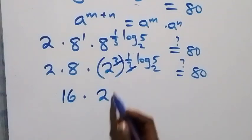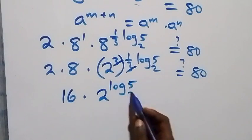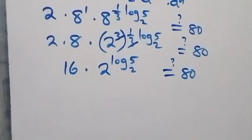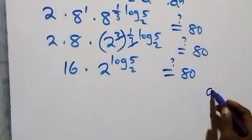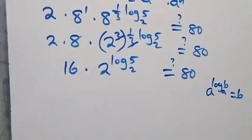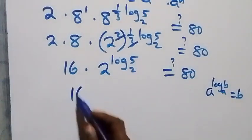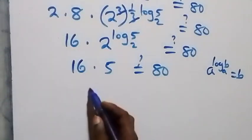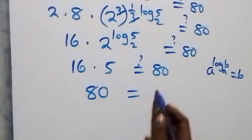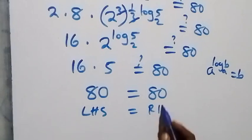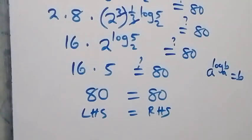Using the identity a raised to power log base a of b equals b, we have 2 raised to power log₂5 equals 5. So 16 times 5 equals 80, which matches the right-hand side. Left hand side equals right hand side, so we conclude that x equals 1 plus (1/3)·log base 2 of 5 satisfies the given problem.